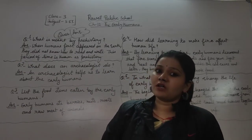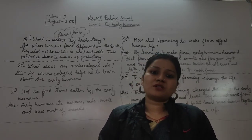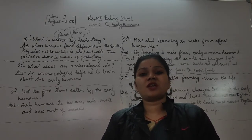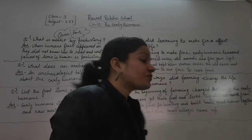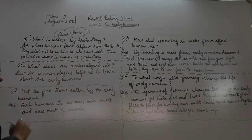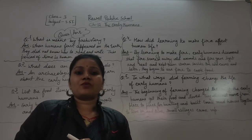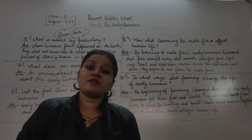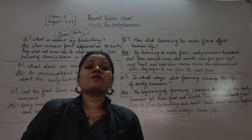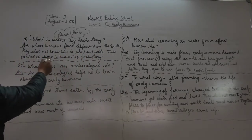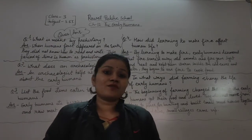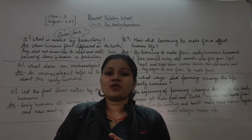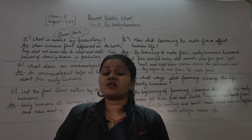Prehistory means the history before recorded history — that means no written history, jiska koi bhi pakka proof nahi hai. Bas imagination hai ki early humans hote the. So prehistory is when early humans first appeared on the earth. They did not know how to read and write — koi bhi written language nahi thi. This period of time with no written language is known as prehistory.